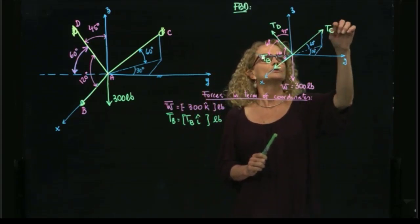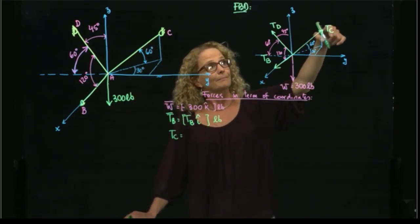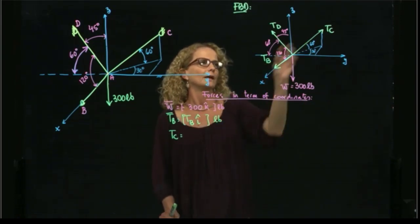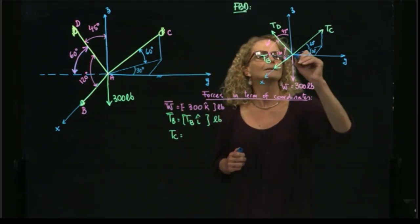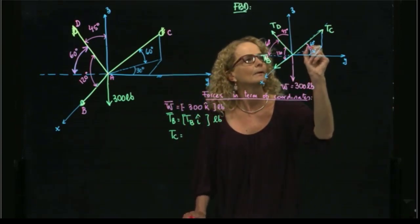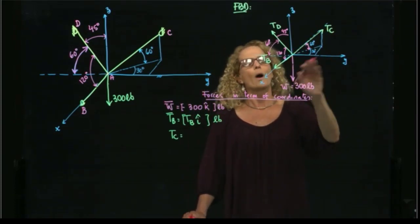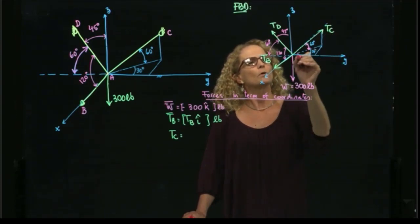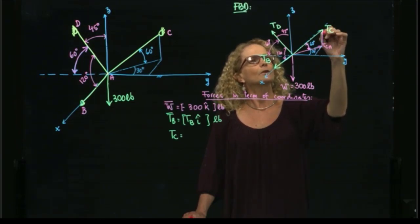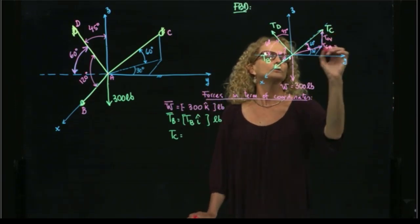Now let's do TC. TC will be equal to the magnitude times the direction. To find the components of this vector, I am given two angles. The first angle is 60 degrees, which is the angle between the force and the plane XY. So if I decompose this force, it will be decomposed into a horizontal component, TC horizontal, and a vertical component, TC vertical.